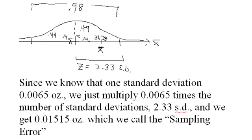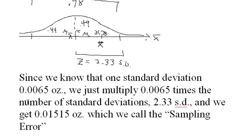Since we know that one standard deviation, we calculated earlier, is 0.0065, we can simply multiply 0.0065 times the number of standard deviations, 2.33 standard deviations, and we get 0.01515 ounces. So this distance is 0.01515 ounces.